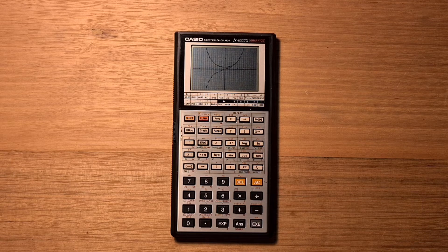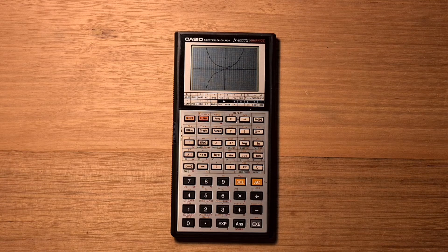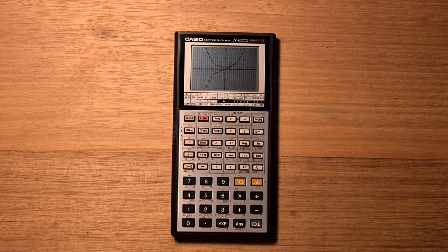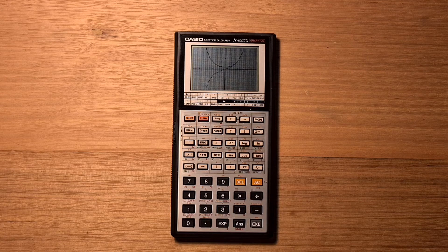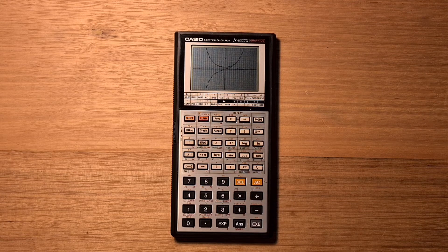So the 7000G also supports a very concise tokenized programming language. The calculator only has 422 bytes of programming memory, but you can pack a surprising amount of functionality into that space. So to edit a program,